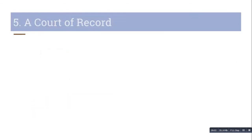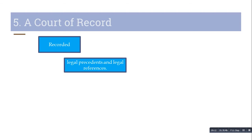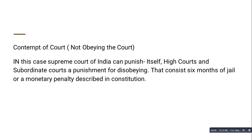The Supreme Court is also called the Court of Record, meaning every statement, judgment, and decision taken by the Supreme Court is recorded. Legal precedents are established and legal references are made from the justice delivered by the court. Once the Supreme Court delivers justice, that justice cannot be questioned. Regarding contempt of court — meaning disobeying the court — the Supreme Court can punish High Courts and subordinate courts for contempt. The punishment consists of six months of jail and a monetary penalty as described in the Constitution.